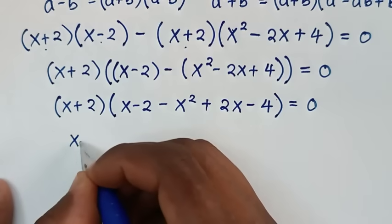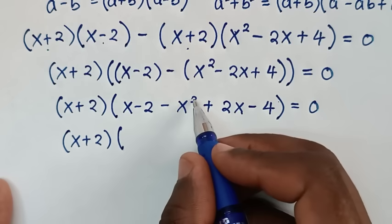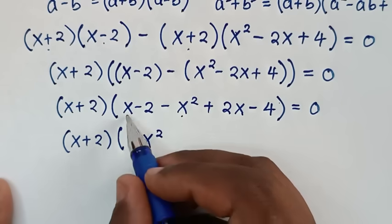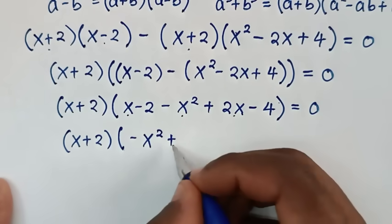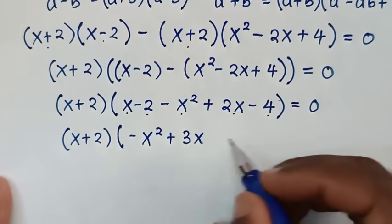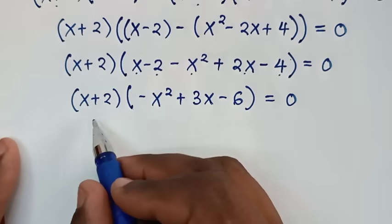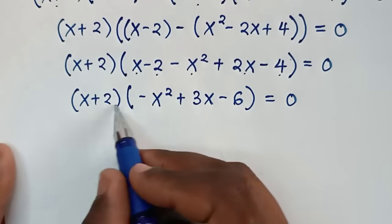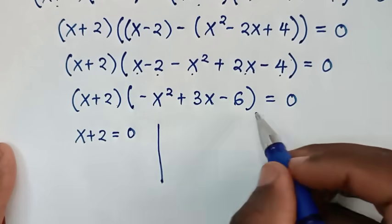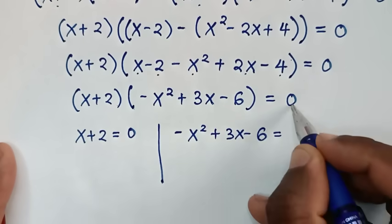Collecting like terms inside the bracket: the x squared term gives negative x squared, the x terms give x plus 2x which is plus 3x, and the constants negative 2 and negative 4 give negative 6. So we have x plus 2 times (negative x squared plus 3x minus 6) equals 0. This gives two solutions: x plus 2 equals 0, and negative x squared plus 3x minus 6 equals 0.